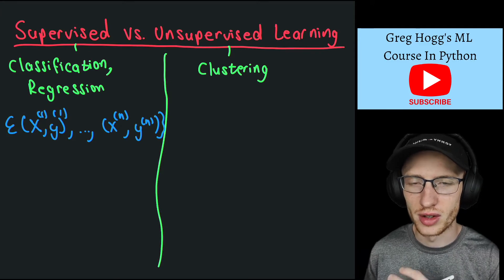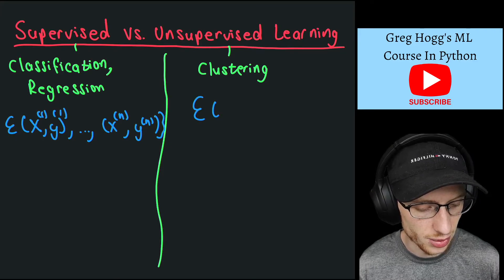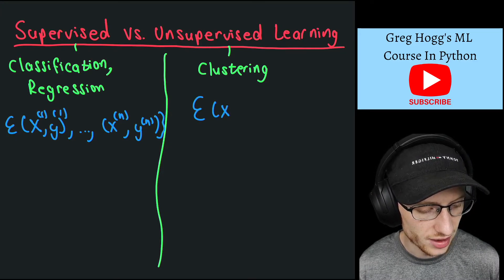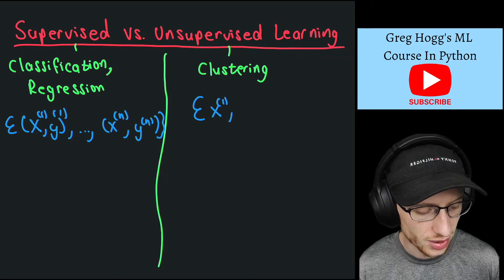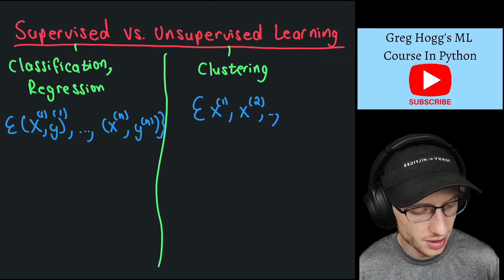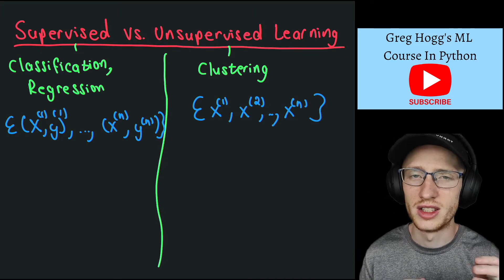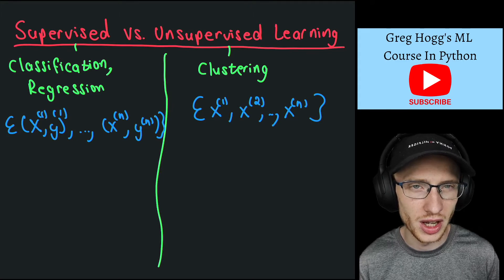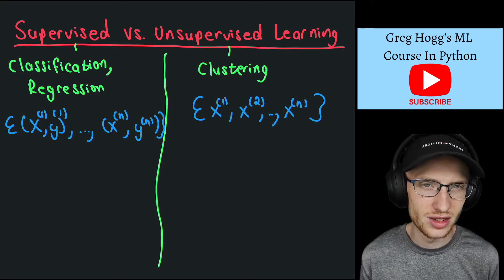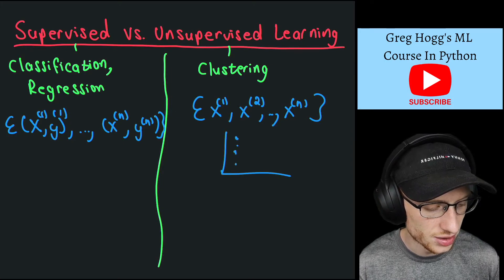For clustering we don't think about it that way. You don't even have pairs — you just have x1, x2, all the way up to xn. In each situation we have n people, but on the supervised side we have a corresponding output y, and on the unsupervised side it's just data points. In clustering we're just looking at data points on a graph and trying to group them.